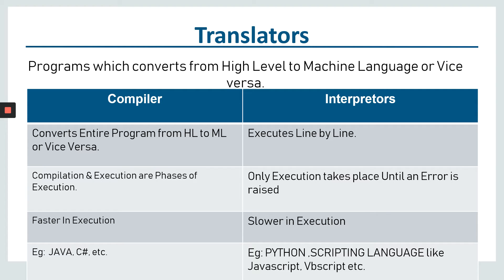On the other hand, a compiler converts the entire program from high-level to machine-level language or vice versa. Here, compilation and execution are two separate phases. It is somewhat faster in execution compared to an interpreter, and examples include Java, C#, and others.